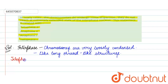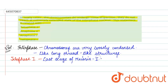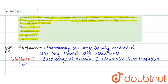Among these four stages, if we talk about telophase first — it is the last stage of meiosis first. During telophase first, what changes do we notice? The chromatin decondensation starts. The beginning of decondensation occurs from telophase first.